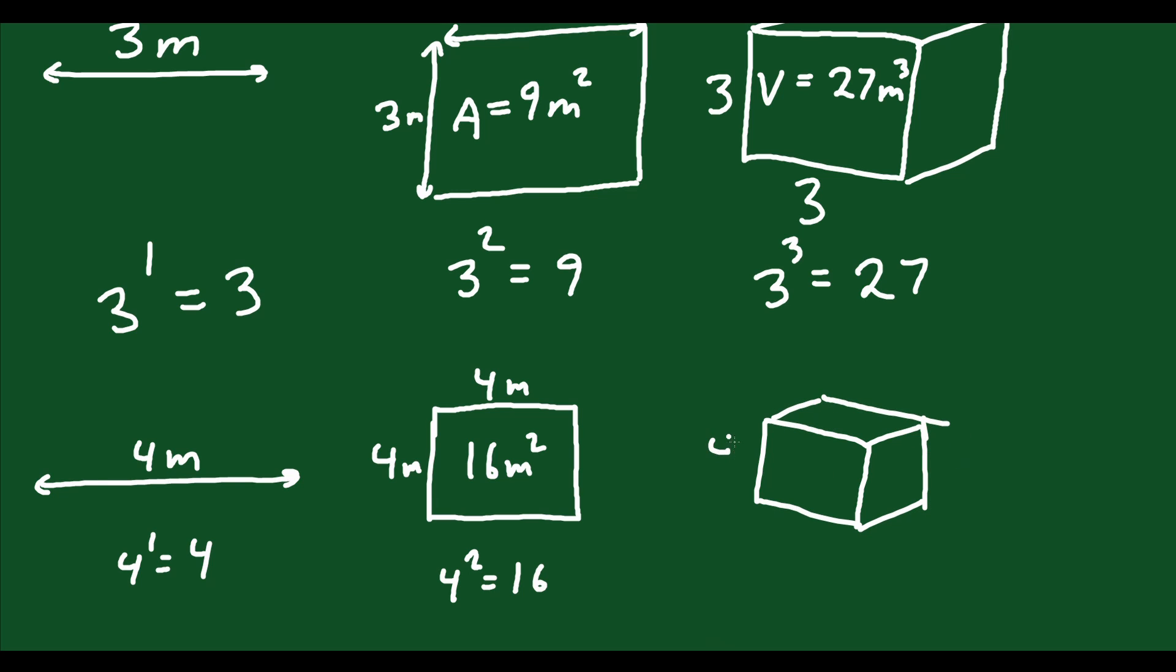You have 4 by 4 by 4. That's 4 cubed. That's going to be 64 meters cubed. What do we notice?